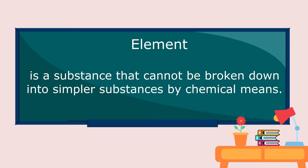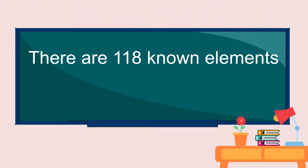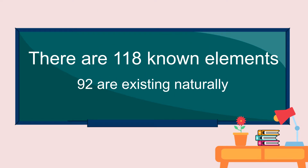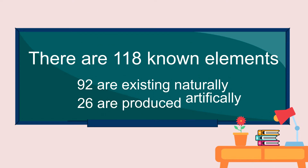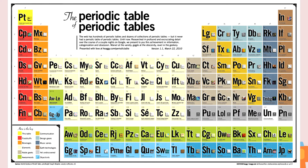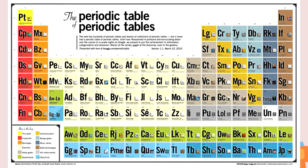Element is a substance that cannot be broken down into simpler substances by chemical means. There are 118 known elements and 92 are existing naturally and 26 are produced artificially. Element has only one kind of atom. All that we can see in the periodic table are elements. Elements in the periodic table are arranged in increasing atomic number.